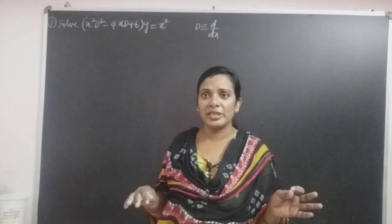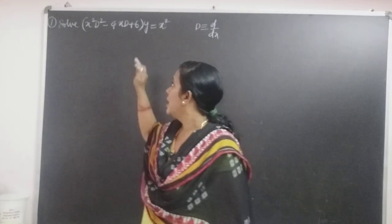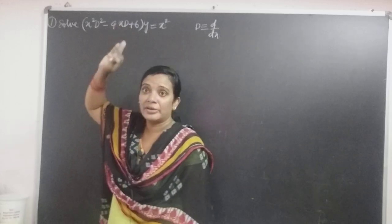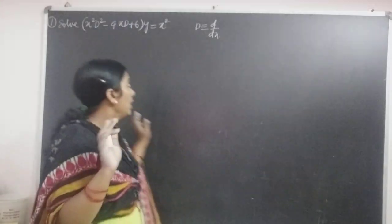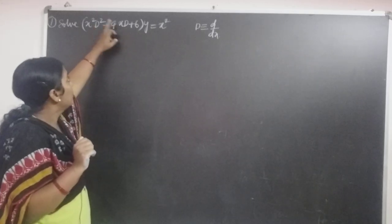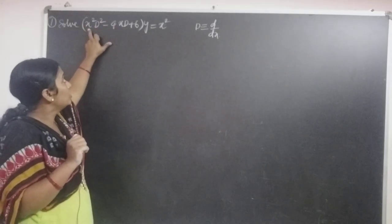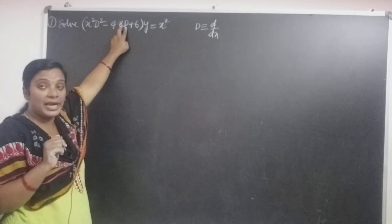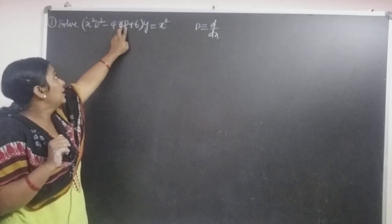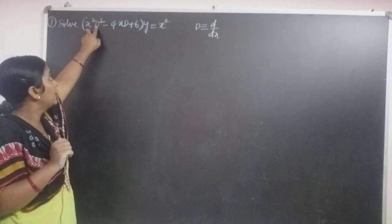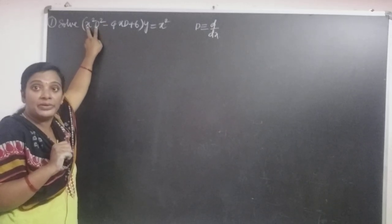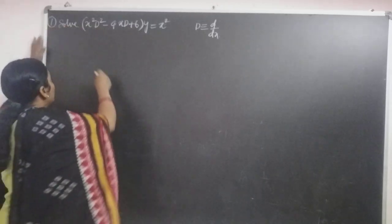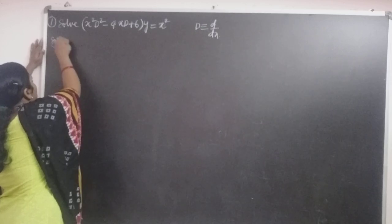What is Cauchy's homogeneous linear differential equation? It is a linear differential equation having variable coefficients. Here x is a variable, x squared is a variable. Observe the equation: D power 1, x power 1 — so xD is one term; D squared, x squared — if the derivative power and the variable power are both the same, then that equation is said to be Cauchy's homogeneous equation.